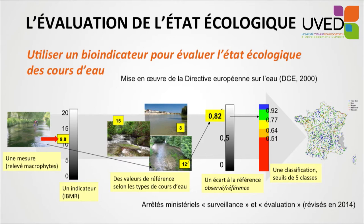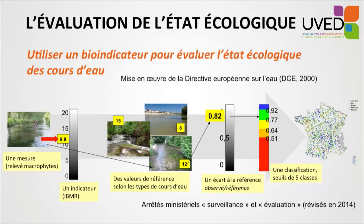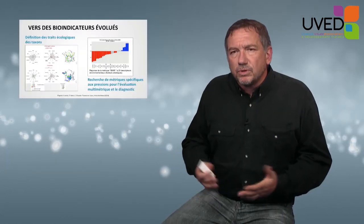We then use a threshold matrix defined during the elaboration of the method. In this example, the result falls in the green class, indicating a good ecological state. This approach allows us to show synthetically the status of waterways across all of France. As seen on the right-hand side map, we can visualize the macrophytic quality of French waterways. The same approach was applied to all biological elements contributing to defining ecological status according to the European Directive.